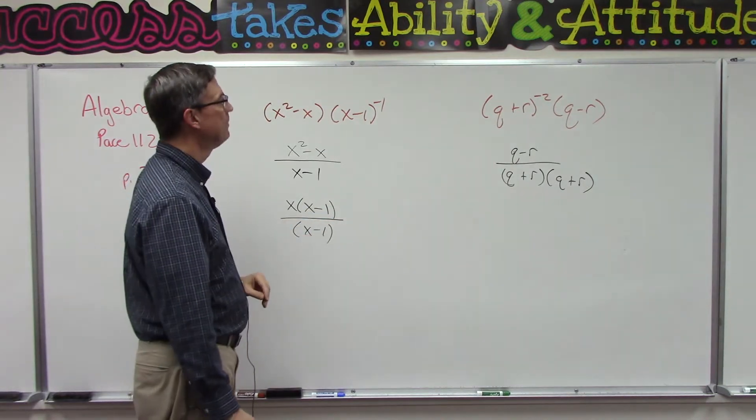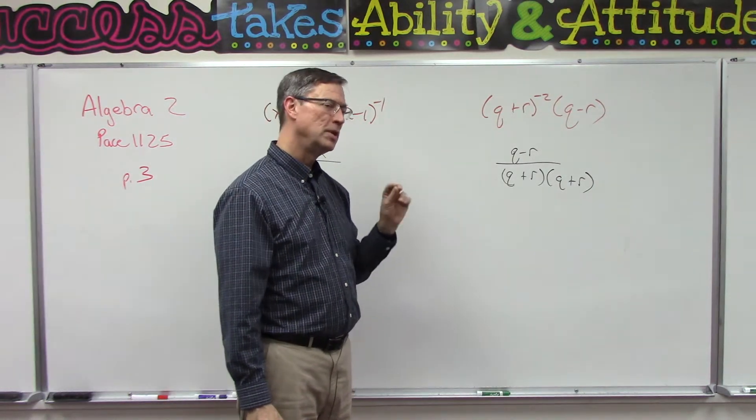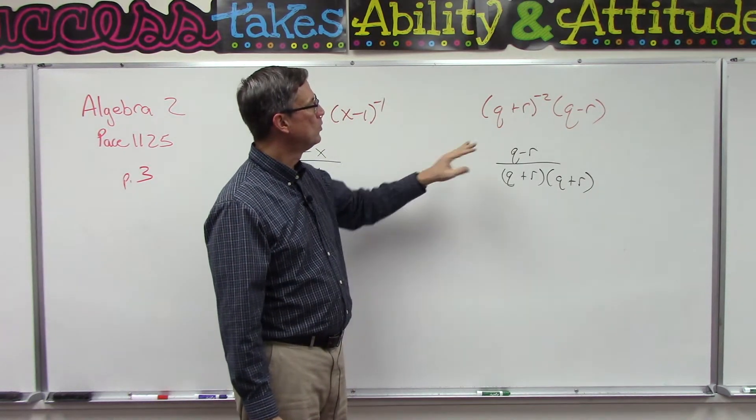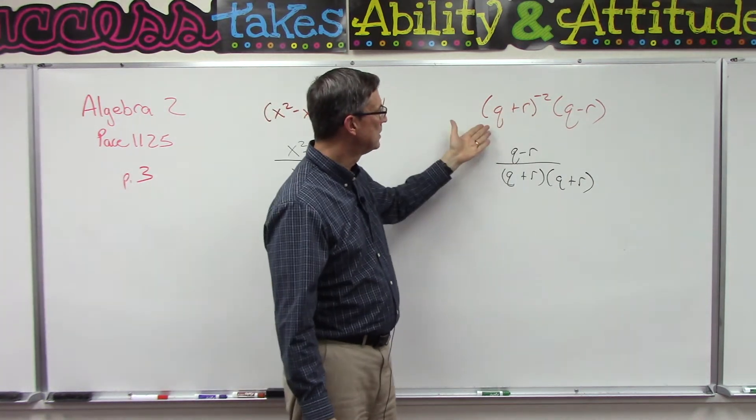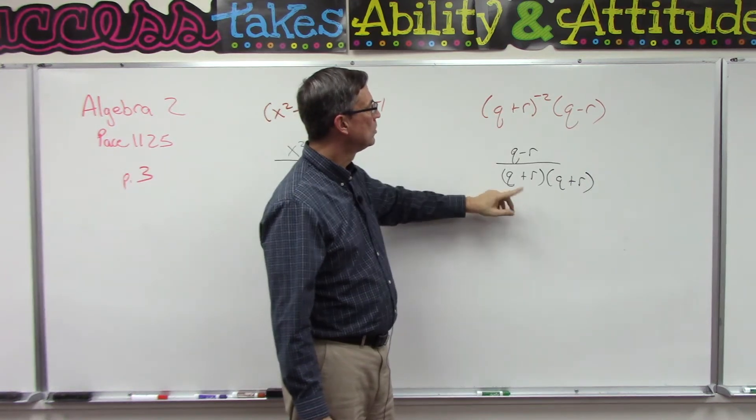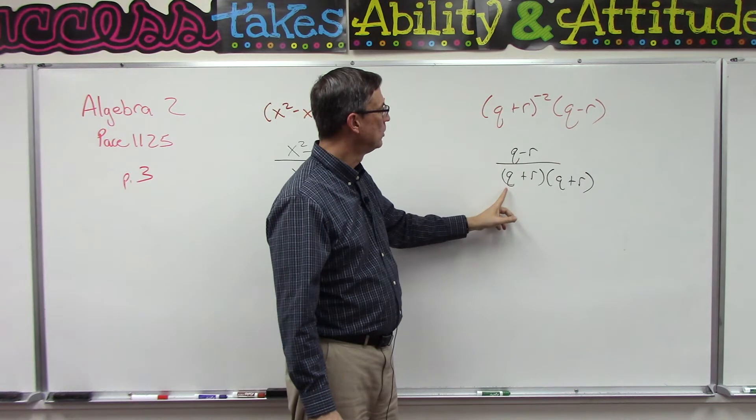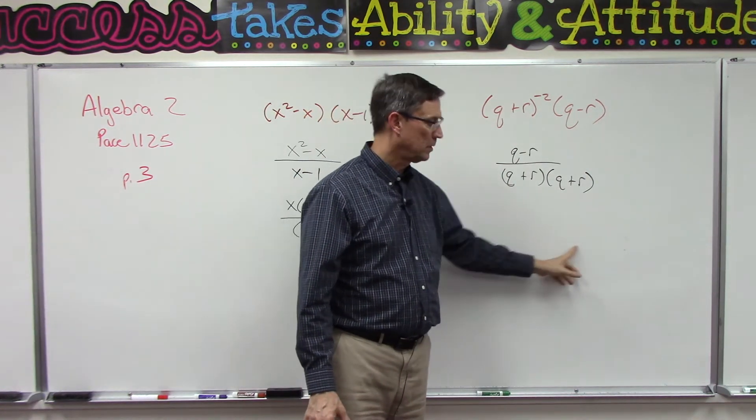Sometimes it gets a little confusing but if you just tune into that and follow those rules I hope you will get the right answer. So the negative exponent means take it to the bottom and then we solved it out by taking that positive two exponent, multiplying this quantity times itself and go ahead and do the FOIL method and you should have the right answer.